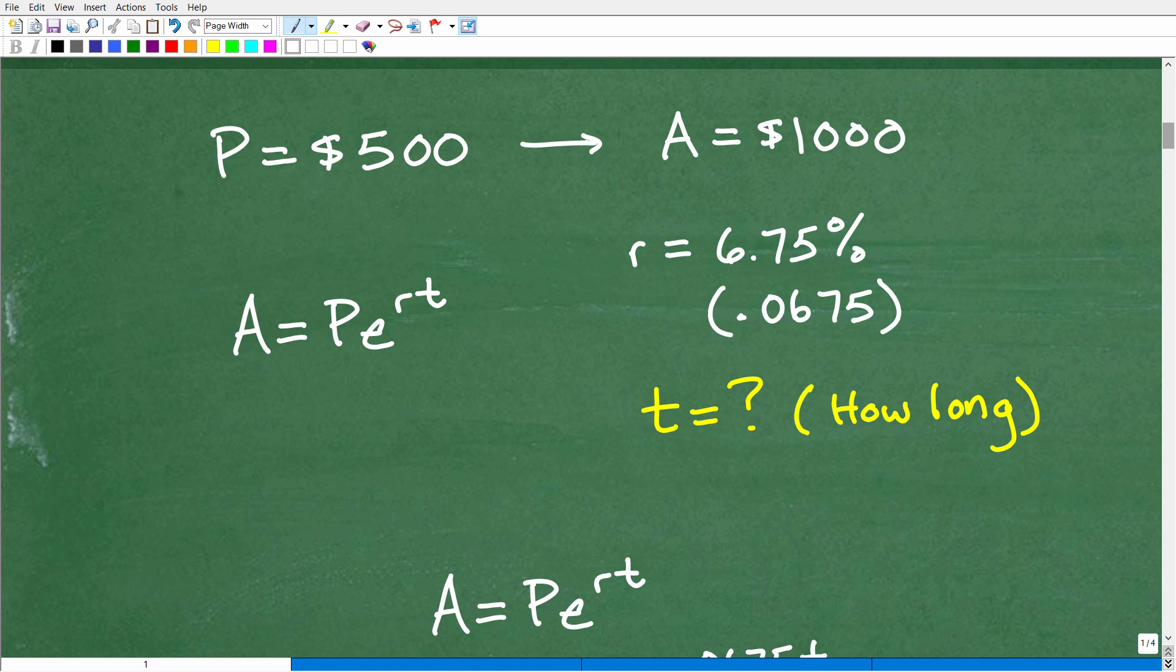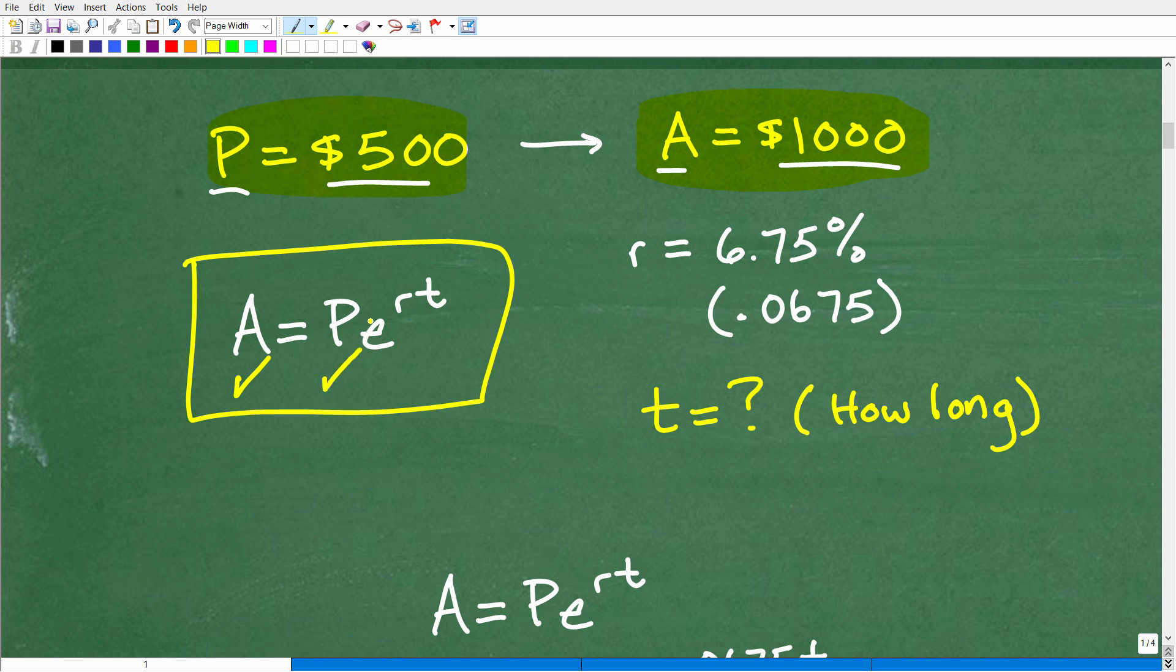All right, so the problem is we want to know how long it's going to take to double $500. So if we start off with $500, that's our principal amount. So if we end up doubling that, we have $1,000. So that's our amount. That's our return on our investment. So here we already have our P equal to 500 and our A is equal to 1,000.